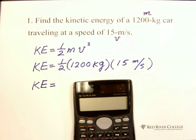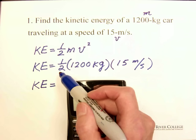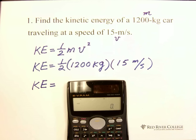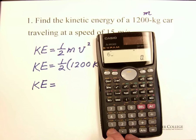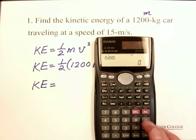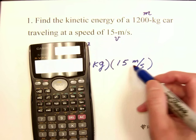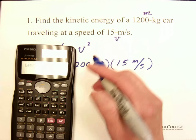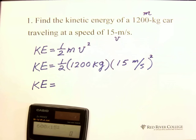We have 1 over 2 multiplied by 1200, half of 1200 which is 600. We have 600, we multiply 15 square. This is 15 m per second because square, we need to put the square. Be careful.